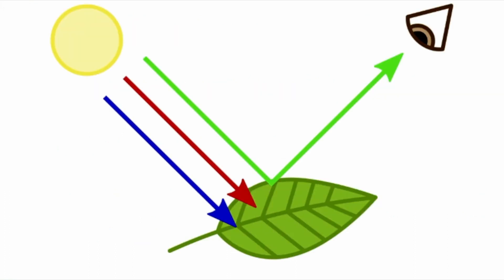Looking at this picture, we can see the sun and observe that the leaf is reflecting the green light while absorbing the red and blue light. So if you've ever wondered why plants look green to us, it's because they absorb the other colors of light but reflect the green light, which is why we see them as green.